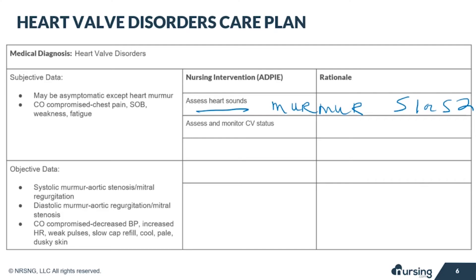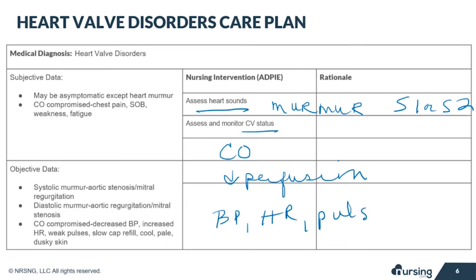We must also assess and monitor the cardiovascular status of these patients, as valve disorders can compromise cardiac output. By assessing cardiovascular status, we can help determine if there is decreased perfusion to the tissues. Be sure to closely assess blood pressure, heart rate, pulses, capillary refill, skin color and temperature — the skin will be cool, pale, and clammy with decreased cardiac output — and also assess for the presence of any arrhythmias.